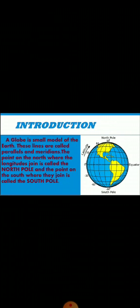A globe is a small model of the earth. When we look at the globe, we see several countries and places marked on it. To find any place on a globe or a map, we use a system of imaginary lines. These imaginary lines — what kind of shapes do they have? Horizontal or vertical? What particular names do they have? We will read all these things in this chapter.